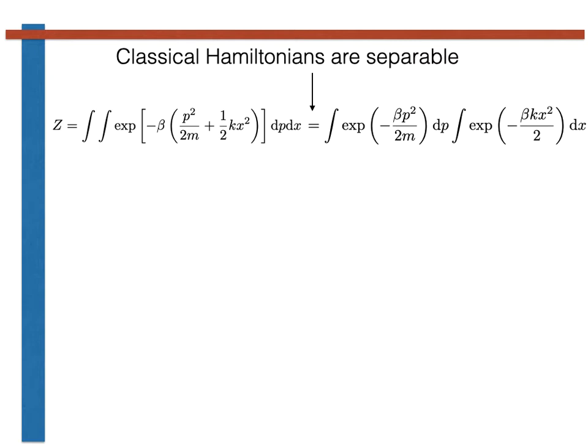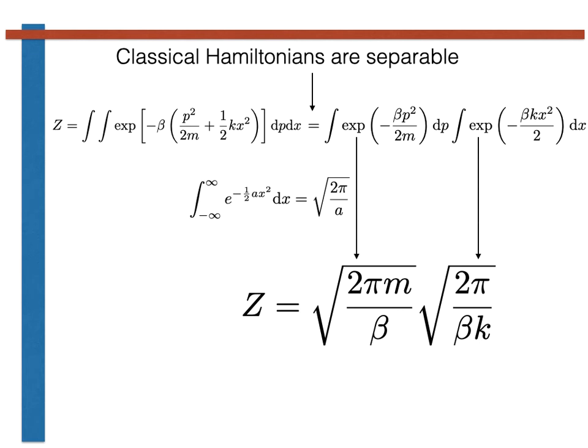We next note that the integrands in our two integrals are familiar. We have seen this integral over all space of e to the minus ax squared over 2 when we did our derivations of the ideal gas. We thus know that this is a standard integral that we can look up in tables of integrals. We can thus easily compute the two integrals and arrive at the result shown here. Gathering terms then brings us to the final result for the partition function that is shown here.